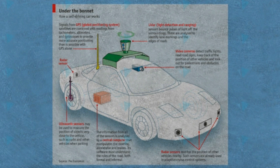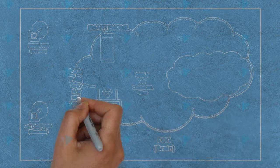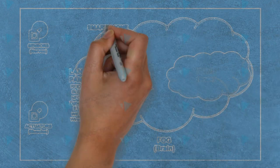A video camera can also be used to detect traffic lights, read road signs, and keep track of position. Radar monitors the position of other vehicles nearby. Ultrasonic sensors detect the position of objects that are very close to the vehicle, like curbs and other vehicles when parking.